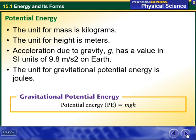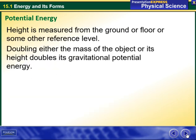This is a constant that is always going to be given to you—just 9.8 meters per second squared. Height is measured from the ground or floor or some other reference level. Doubling either the mass of the object or its height will double its gravitational potential energy.